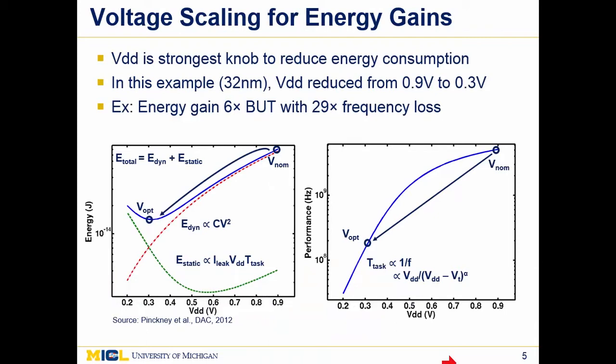To reduce energy or power consumption, it's well known that reducing supply voltage VDD is the most effective approach, particularly for digital systems. Focusing on energy, the left plot separates dynamic energy — governed by CV² — and leakage or static energy, which is the static power multiplied by the time taken to perform a task or clock cycle. Total energy is shown in blue, and it reduces quite nicely on this log-linear plot as we move voltage down from a typical value of around 0.9 or 1 volt.